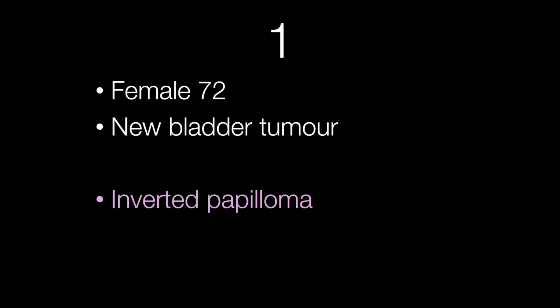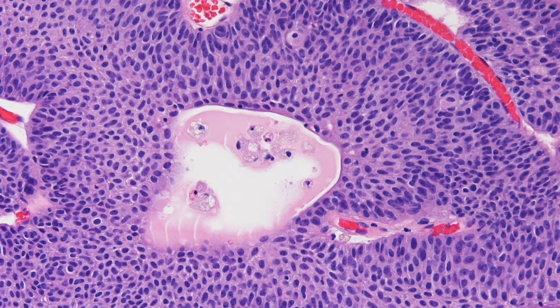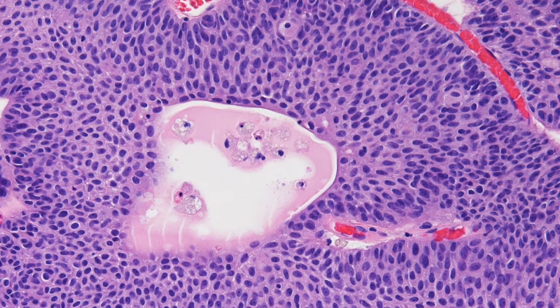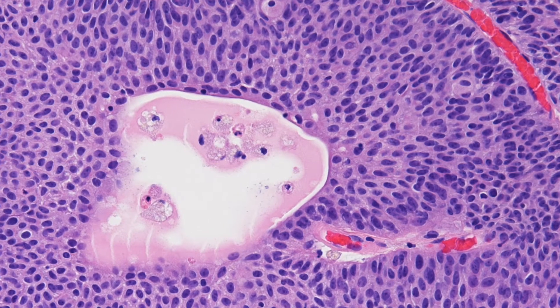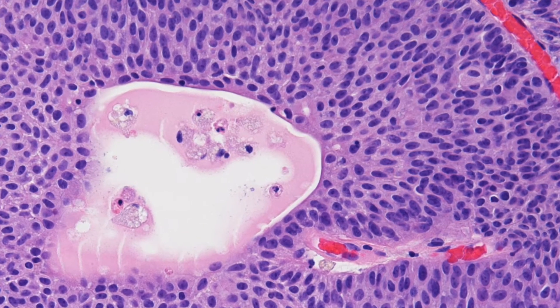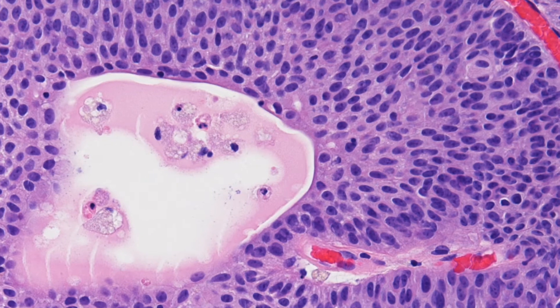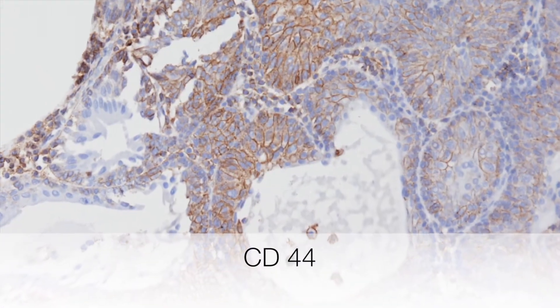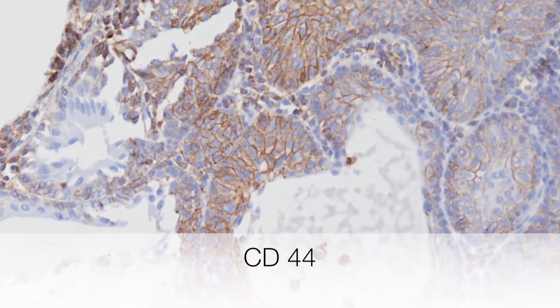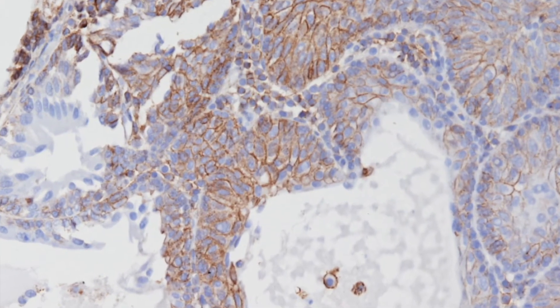This is the lesion from a female of 72 and the answer is of course an inverted papilloma. There is no evidence of nuclear atypia and the nests of urothelial cells are lined by umbrella cells. The CD44 shows characteristic full thickness staining indicative of a reactive type of urothelium.